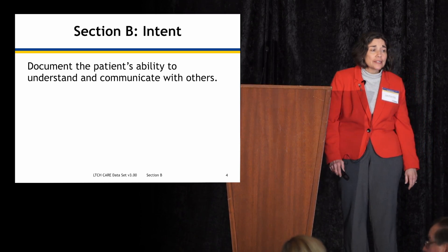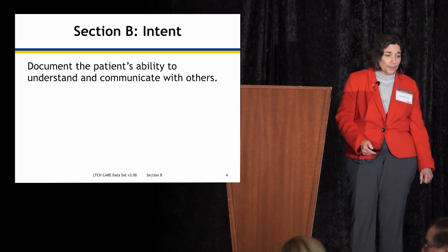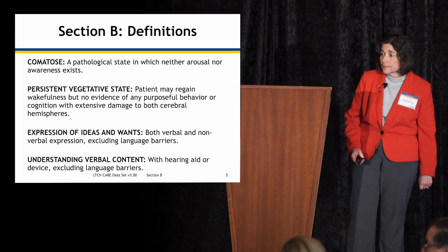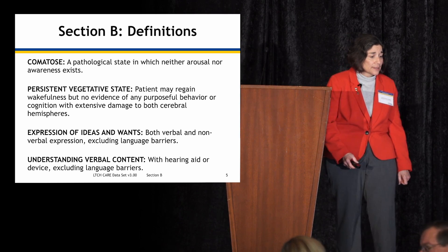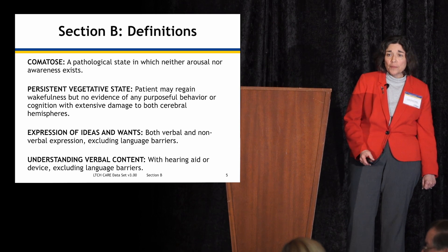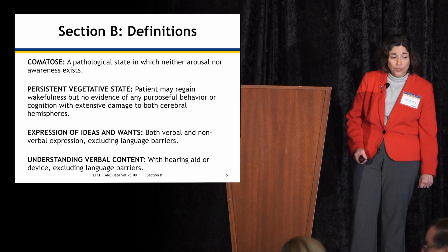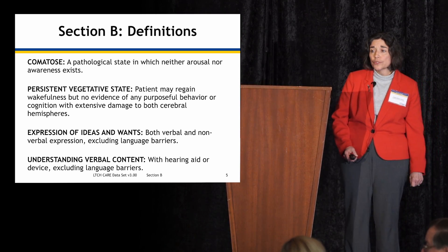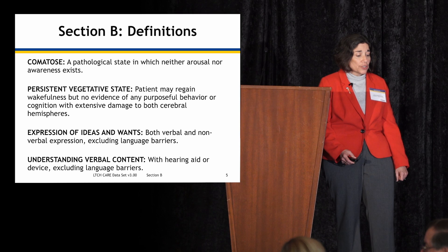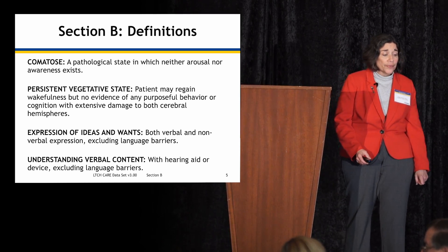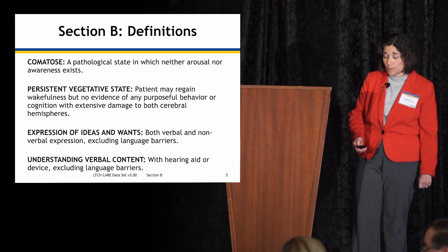The intent of this section is to document the patient's ability to understand and to communicate with others. Key definitions: comatose is a pathological state in which neither arousal nor awareness exists. Persistent vegetative state is where the patient may regain wakefulness, but with no evidence of purposeful behavior or cognition, with extensive damage to both cerebral hemispheres. Expression includes both verbal and nonverbal expression, excluding language barriers. Understanding verbal content is with hearing aid or device, also excluding language barriers.